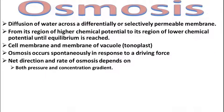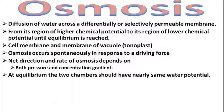Net direction and rate of osmosis depends on pressure and concentration gradient. Gradient का मतलब है कितनी कम-ज़्यादा है। एक side में जो concentration ज़्यादा है, दूसरे side में बहुत कम है, तो osmosis बहुत fast होएगी। अगर difference कम है तो osmosis आराम से होती है, और pressure ज़्यादा apply किया जा रहा है तो उससे भी osmosis fast होती है।